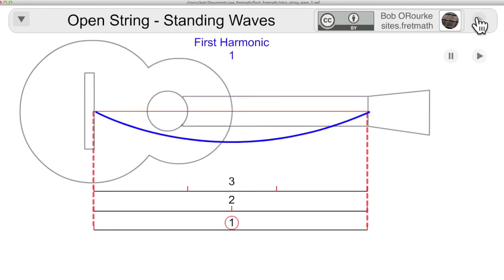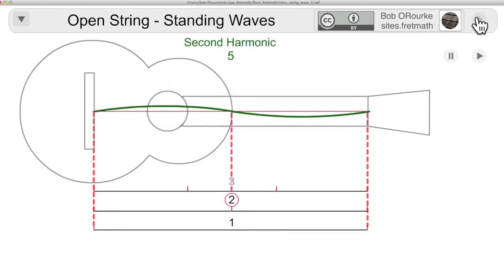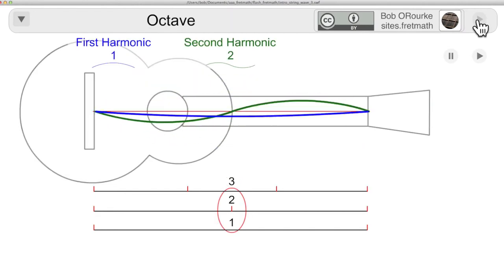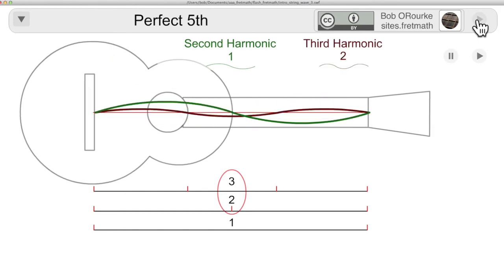And the ratios all come from the way the string subdivides when it's plucked. Here is the fundamental or first harmonic. And here is the second harmonic, divides the string in two. And here's the third harmonic, divides the string in three. Here is an octave from the harmonics of a single string, and a perfect fifth from the harmonics of a single string.